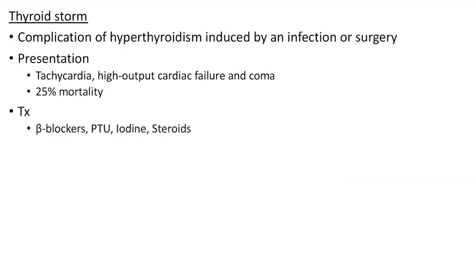Now let us see about thyroid storm, a complication of hyperthyroidism induced by infection or surgery. Clinical features include tachycardia, high output cardiac failure and coma. It has a mortality of 25%. It is an emergency and we need to treat with beta blockers, propylthiouracil, iodine and steroids.